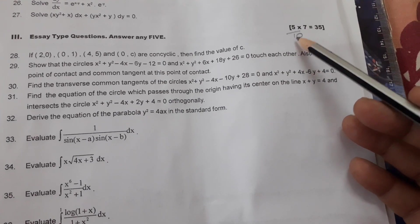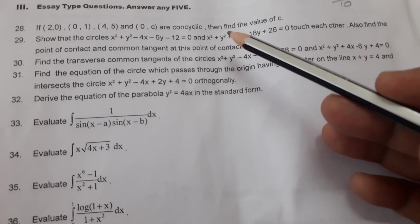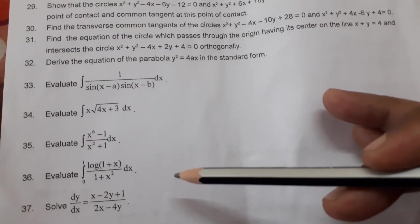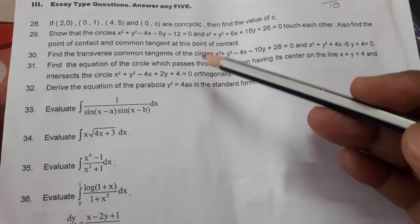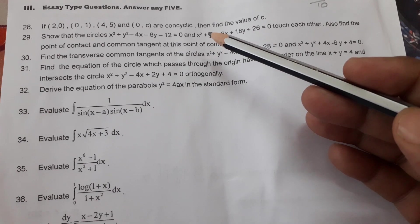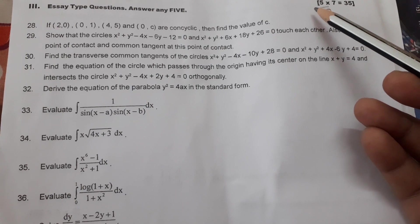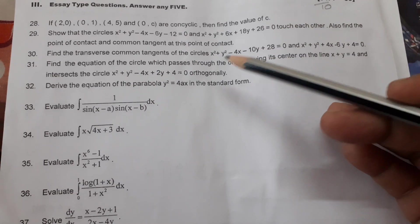Each one carries 7 marks. 5 × 7, 35. 1, 2, 3, 4, 5, 6, 7, 8, 9, 10. Question number 28 to 37. These are LA type questions, LAQs. Out of 10, 5 only we have to answer. 5 × 7 is 35.